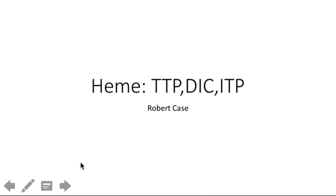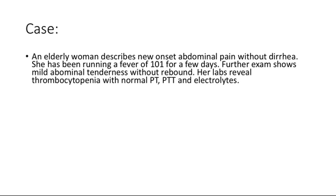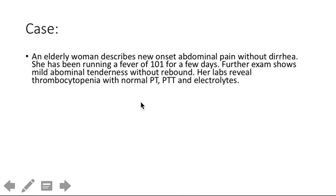Let's go through some serious bleeding disorders and how to differentiate and diagnose them on your shelf. First, consider a presentation: an elderly patient comes in with abdominal pain leading you toward a GI or diarrhea illness, but they have no diarrhea. Further evaluation reveals a non-specific abdominal exam, thrombocytopenia that doesn't clearly explain the abdominal pain, and a normal PT/PTT suggesting normal coagulation function.